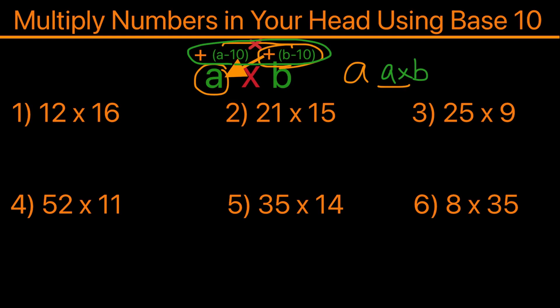With the first example, 12 times 16, the first step is to think in a base of 10. The first number 12 is 2 over 10, so we'll place a plus 2 on top. The second number 16 is 6 over 10, and we'll place the plus 6 above.